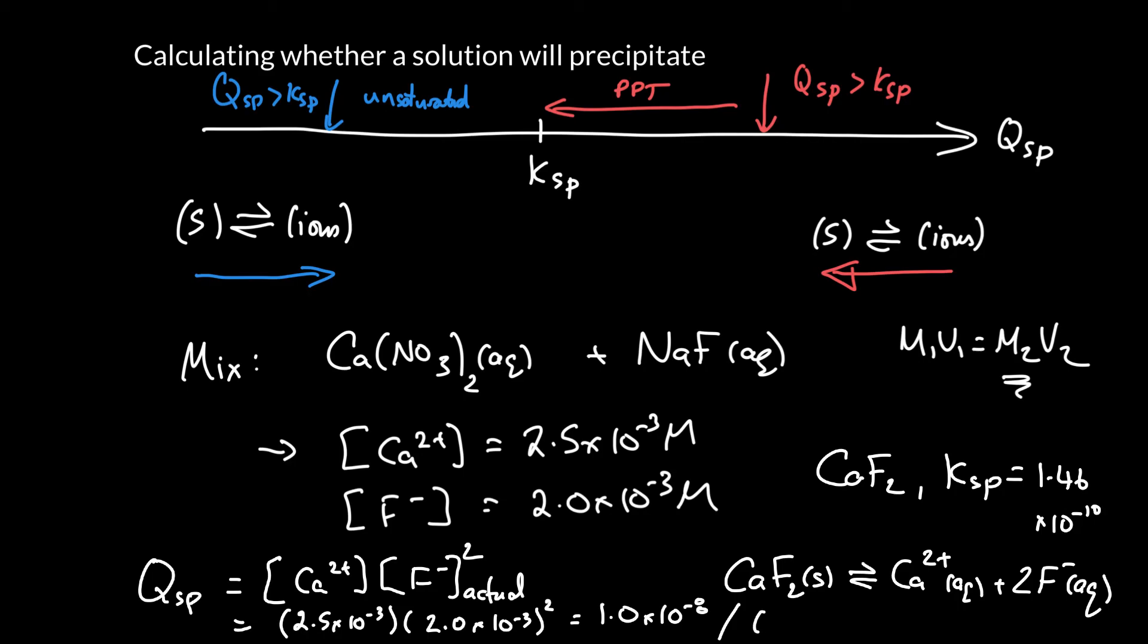So you might want to pause the video and ask, what does that mean? What will the solution do? If you've unpaused it, well, Q is bigger than K. It's about 100 times bigger. So that means that it's got to decrease to reach equilibrium. How does it decrease? It has to lower the concentration of ions. How does it lower the concentration of ions? By combining them and forming that insoluble precipitate.